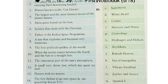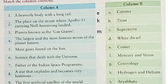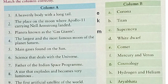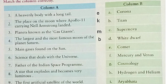Now let's read out number 4: the largest and most famous moon of the planet Saturn. Yes, you are right. It is Titan and it is given in point B. So, in front of 4, write B. Now let's see question number 5: main gases found on the sun. These are hydrogen and helium, given in point H. So, we will write H here.